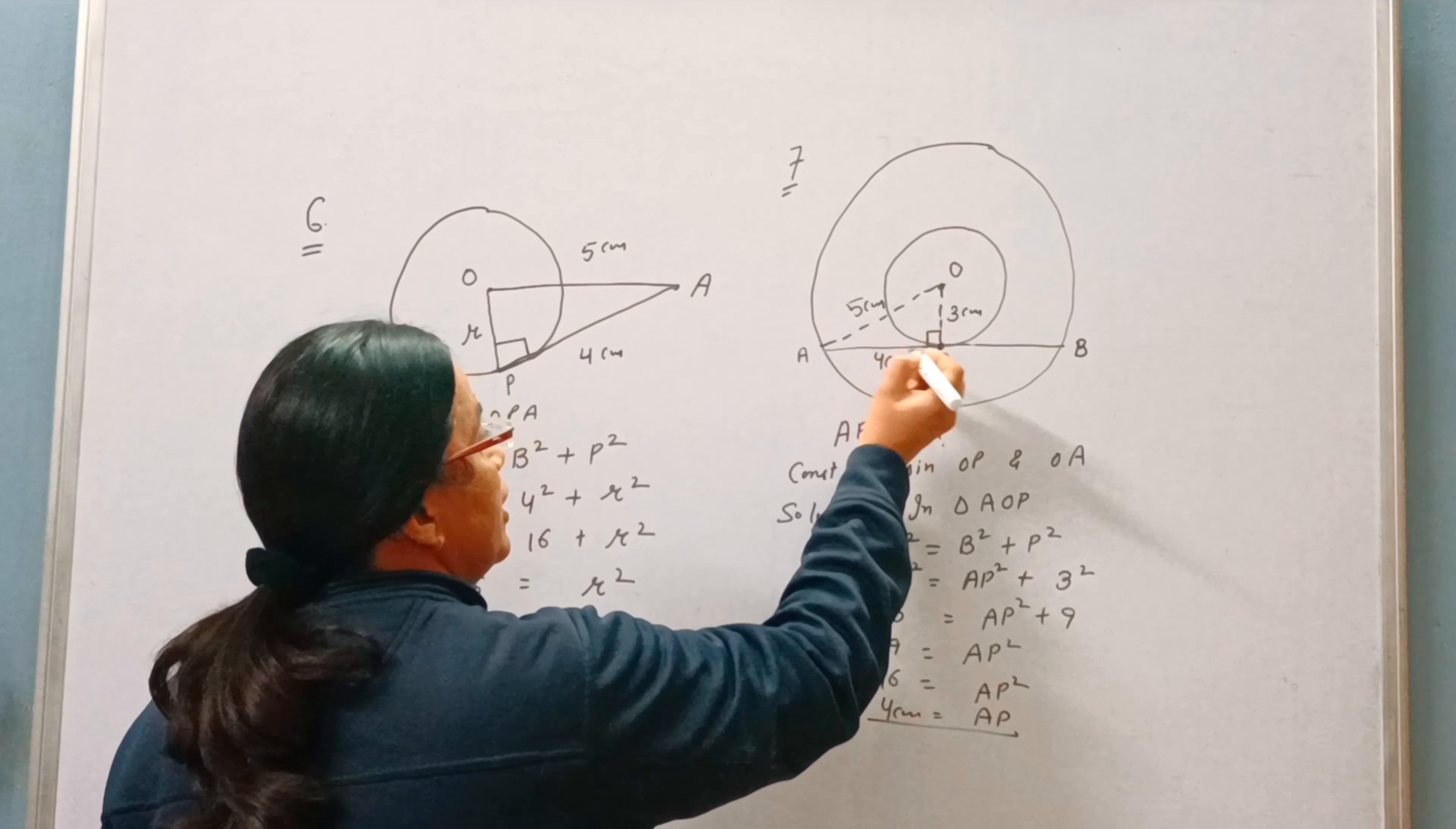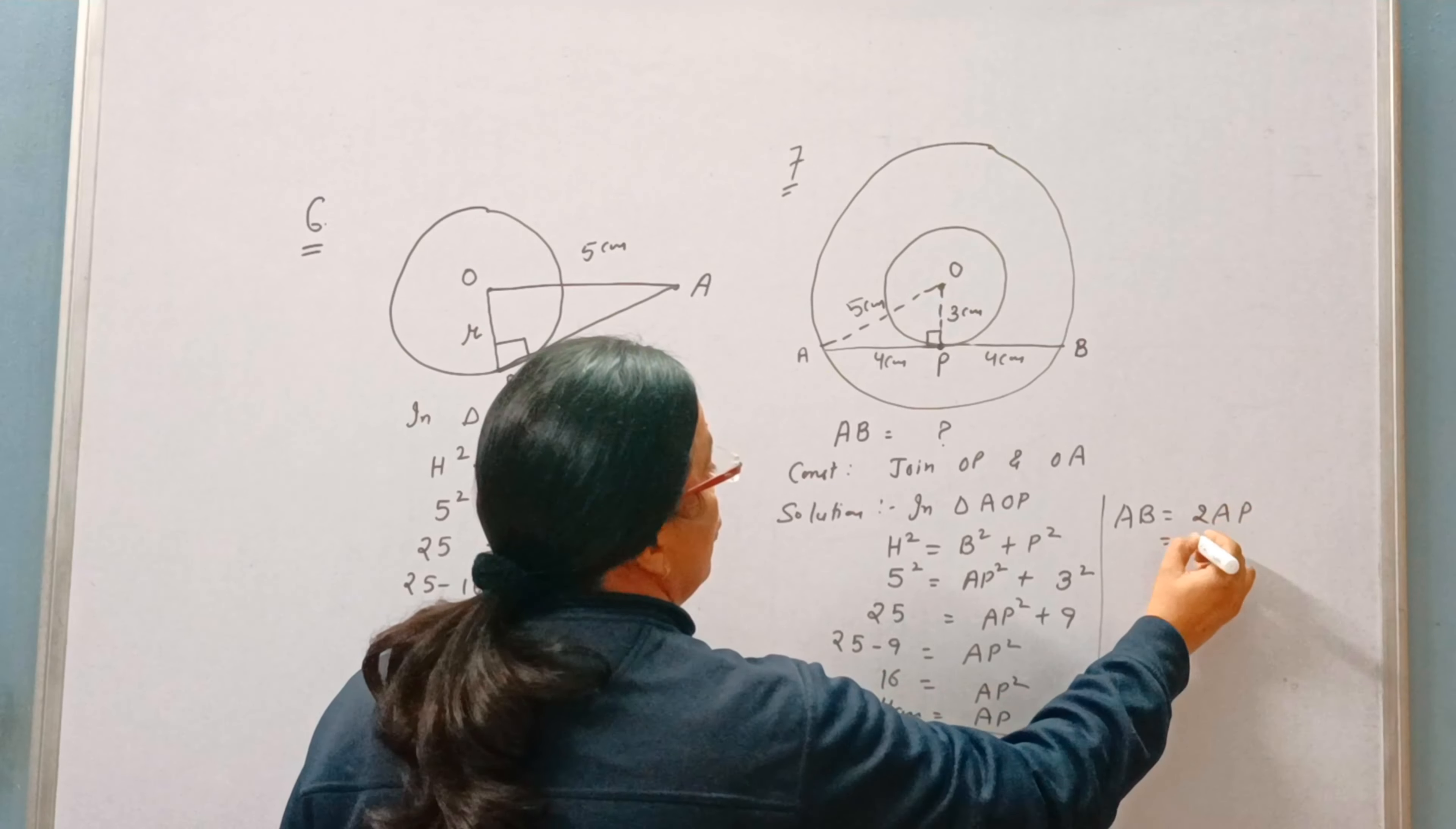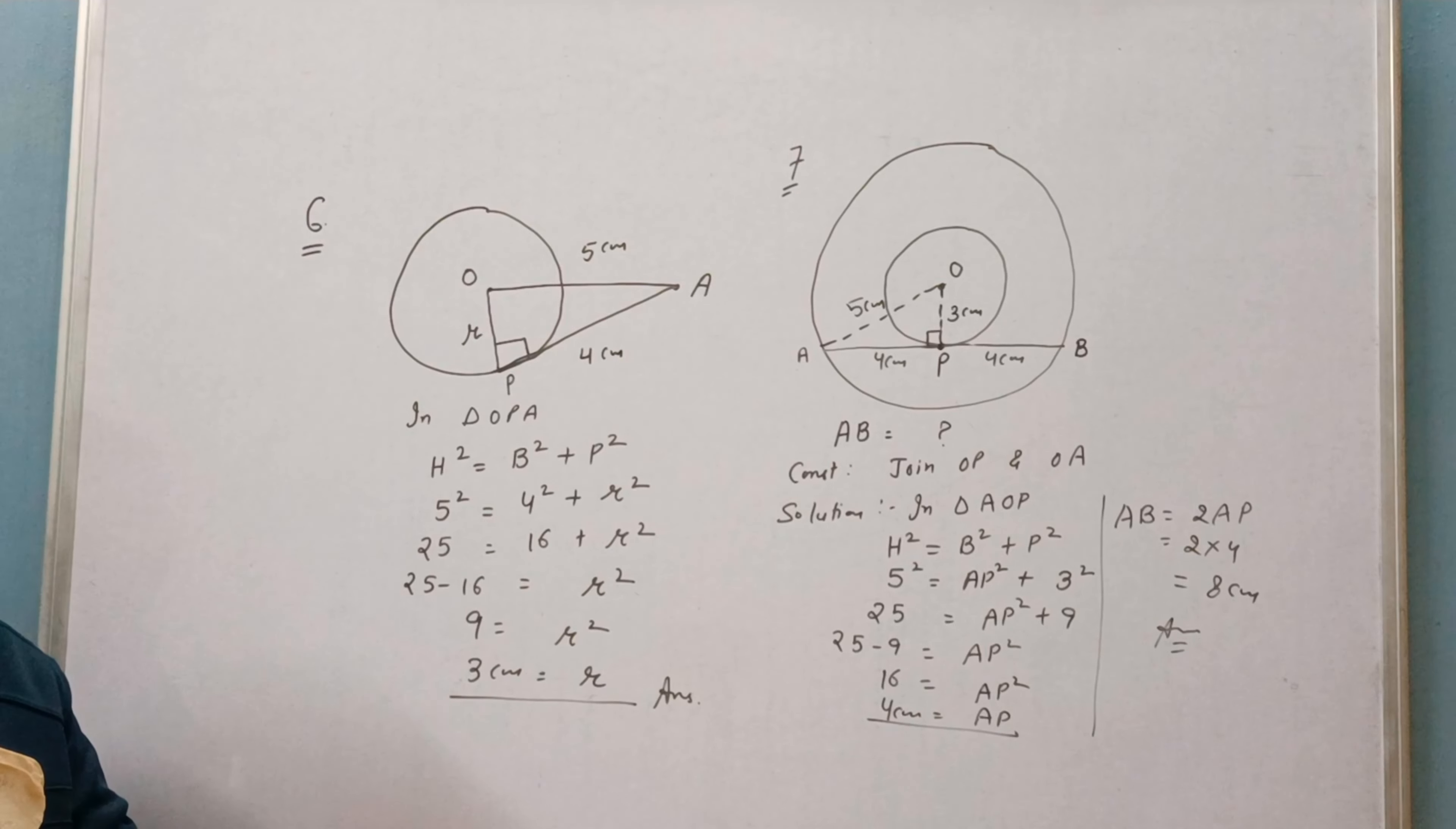Now if AP is 4 cm, then PB is also 4 cm. So AB will be double of AP, 2 × 4, that is 8 cm. So what is the length of the chord AB? 8 cm. These are the questions.